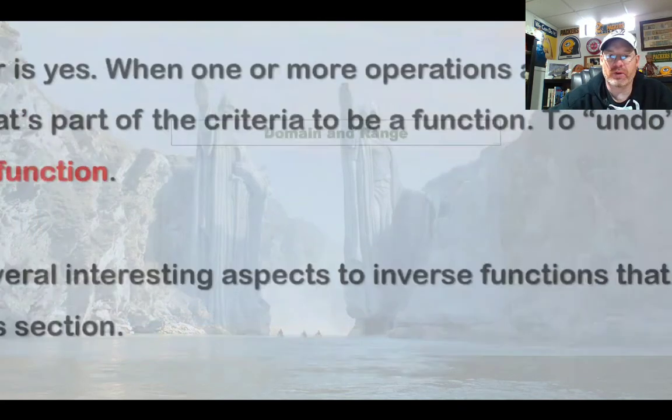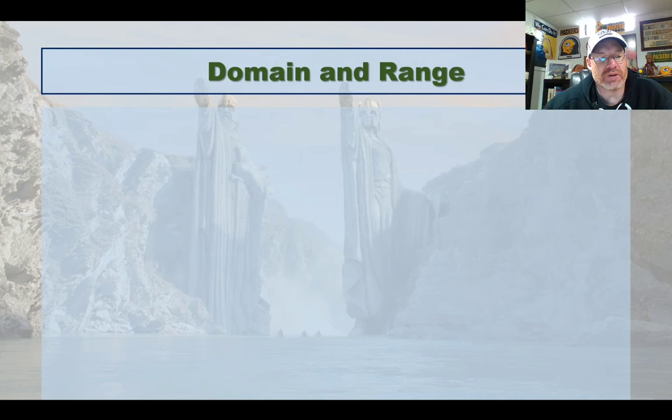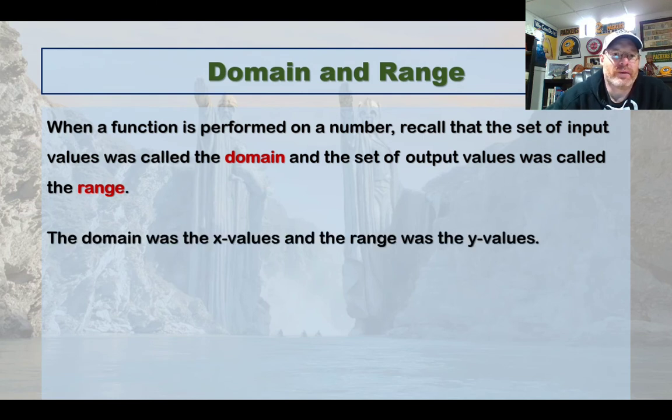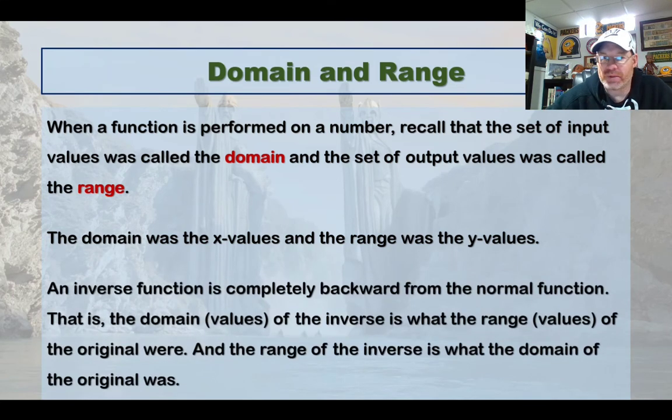We're going to start by talking about the domain and the range, and how the domain and range of the original function are related to that of the inverse function. When a function is performed on a number, recall that the set of input values is referred to as the domain, and the output values is the range. The domain was all of the x values and the range was all the y values. In the case of an inverse function, it's actually backwards from that. The domain of the original ends up being the range of the inverse, and the range of the original becomes the domain of the inverse.